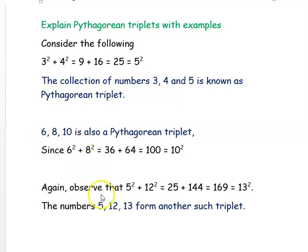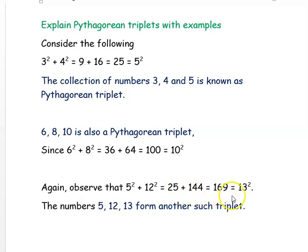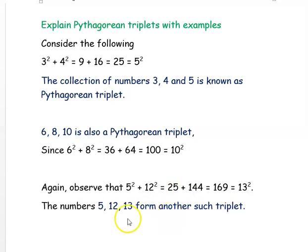Again, observe that 5² + 12² = 25 + 144 = 169, which is nothing but 13². So the three numbers 5, 12, and 13 form another Pythagorean triplet.